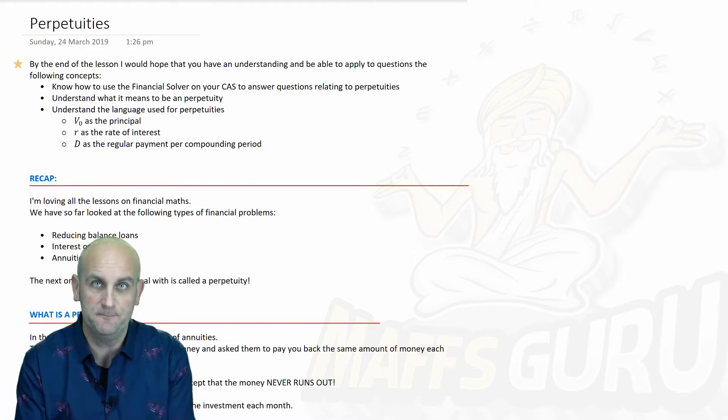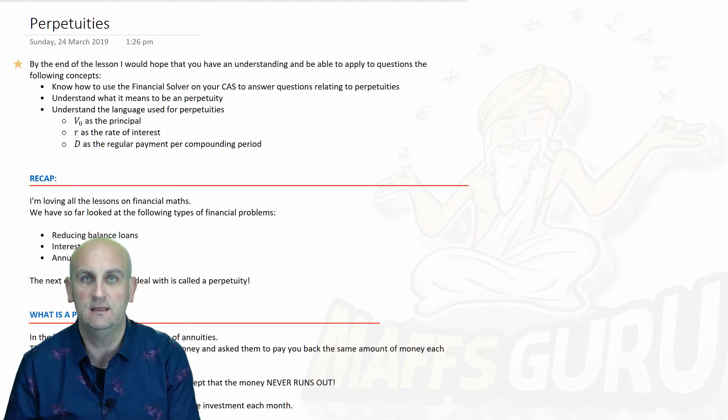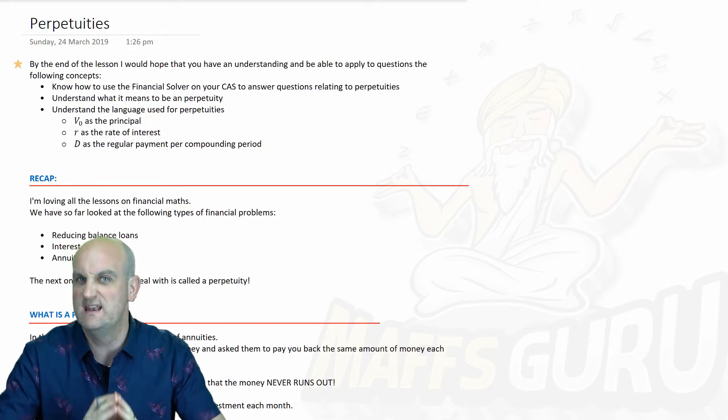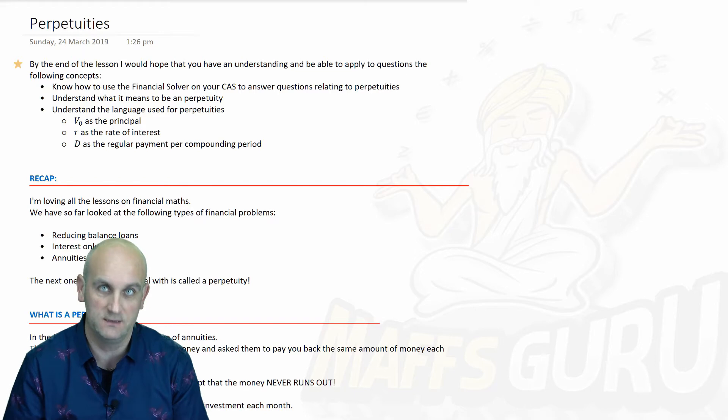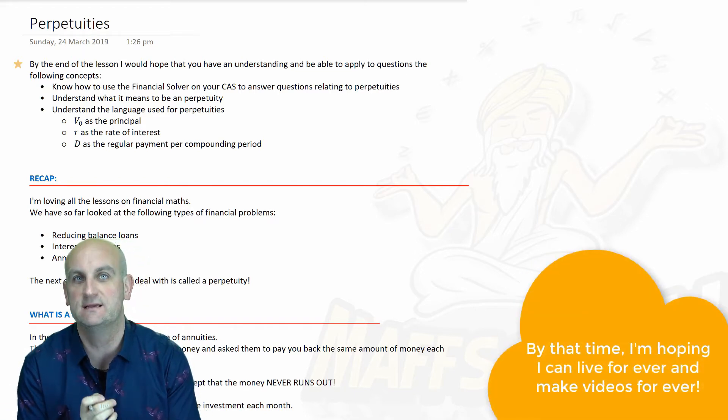Well, a perpetuity is very much like my pension in the United Kingdom. I've paid a load of money in, I get interest on that money, and when I get to retirement age it pays out the same amount every single month and it never runs out. Well, until I sadly die. But hopefully that's not gonna be for many years to come.